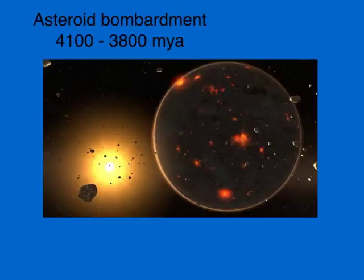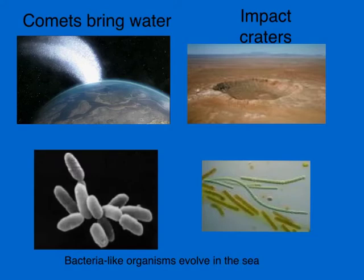Another major event occurred about 4,500 million years ago, when a giant asteroid hit the Earth and caused debris to fly out, resulting in the formation of our Moon. From 4,100 million years ago to 3,800 million years ago, the Earth and all the other planets were bombarded by asteroids and comets, which were very important because they brought water to the Earth.